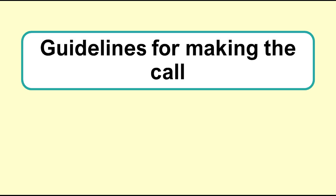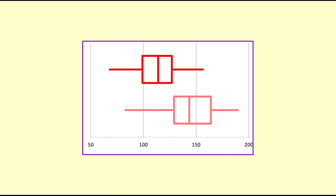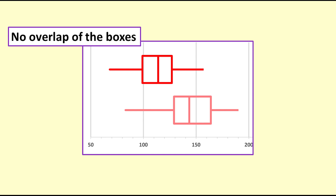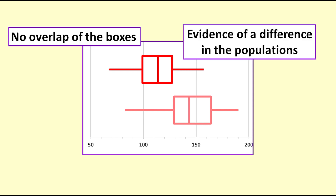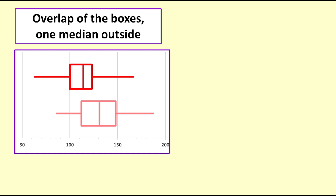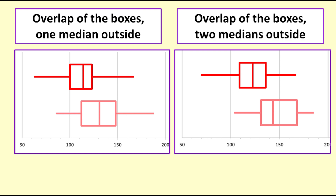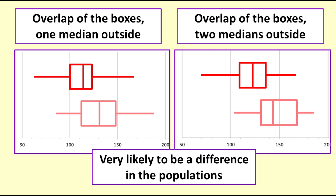Guidelines for making the call. It is helpful to have some guidelines in making the call as to whether we have evidence of a difference in the population or not. For this pair of box plots, the boxes do not overlap at all — this is pretty strong evidence that the median weight of the pink apples is greater than that of the red apples back in the population. In this pair of box plots, the boxes do overlap, but one of the medians lies outside the box of the other sample. And in this pair of box plots, the boxes do overlap, but both the medians lie outside the box of the other sample. In these instances, we do have evidence that there is likely to be a difference in the weights back in the populations.